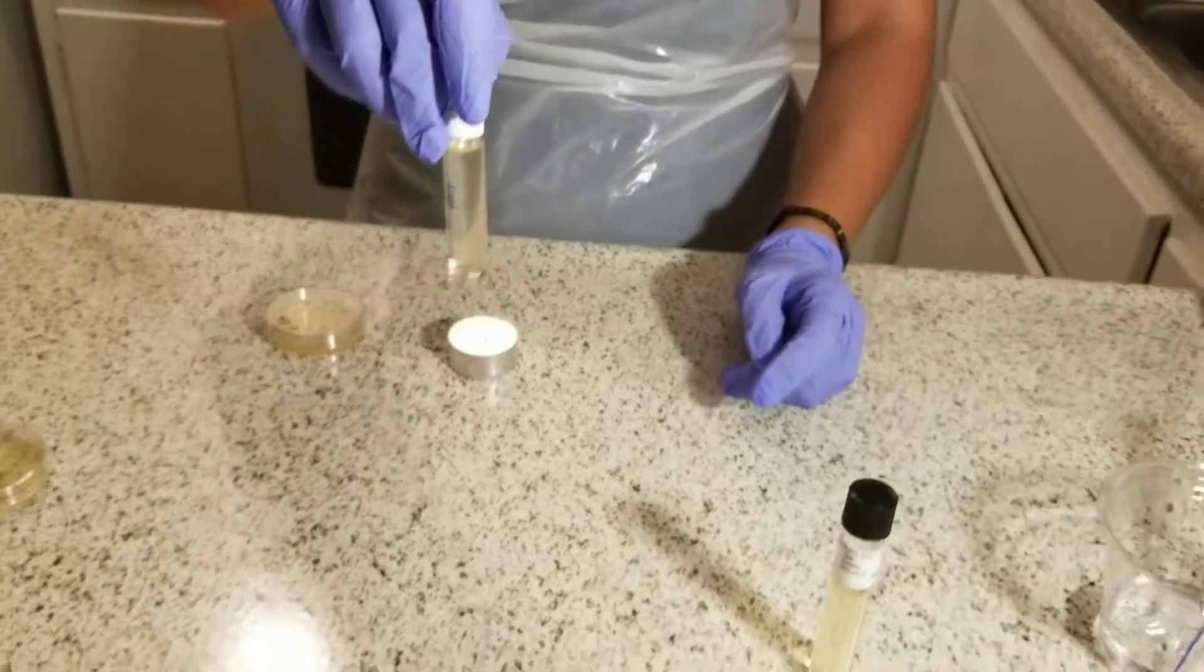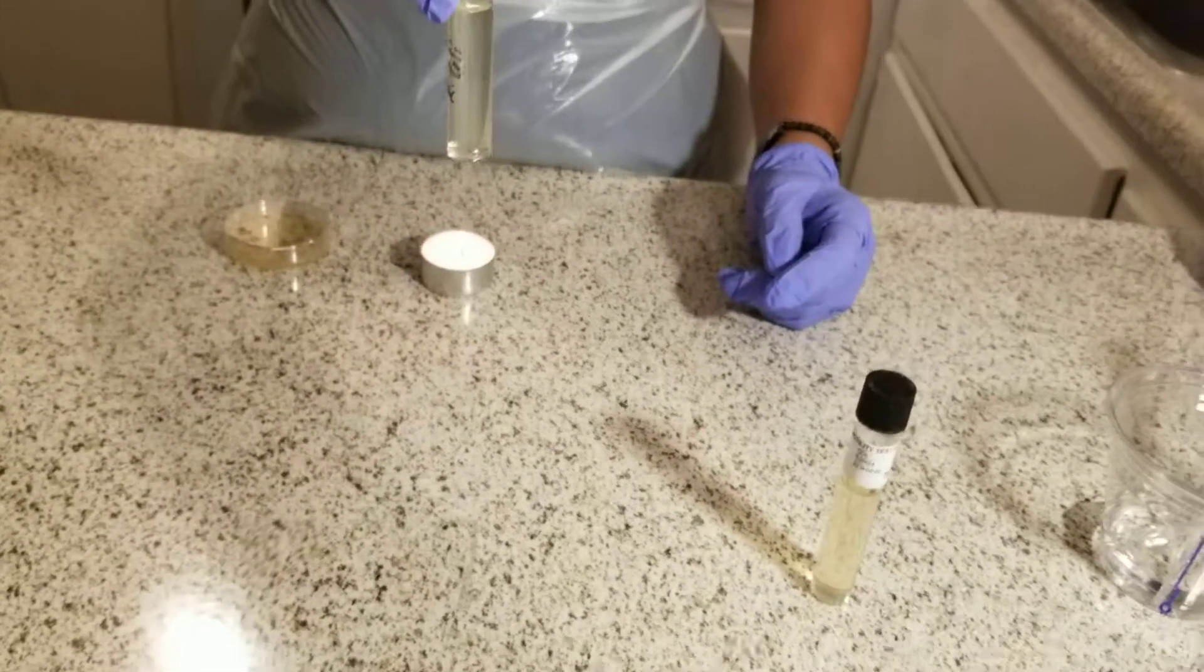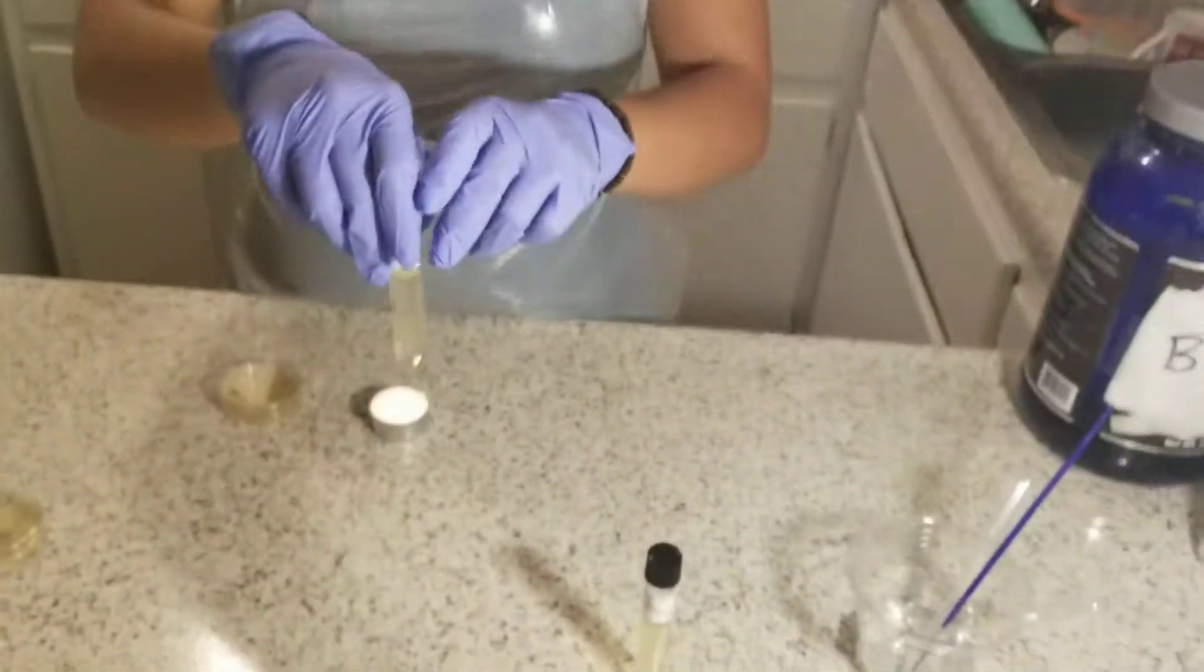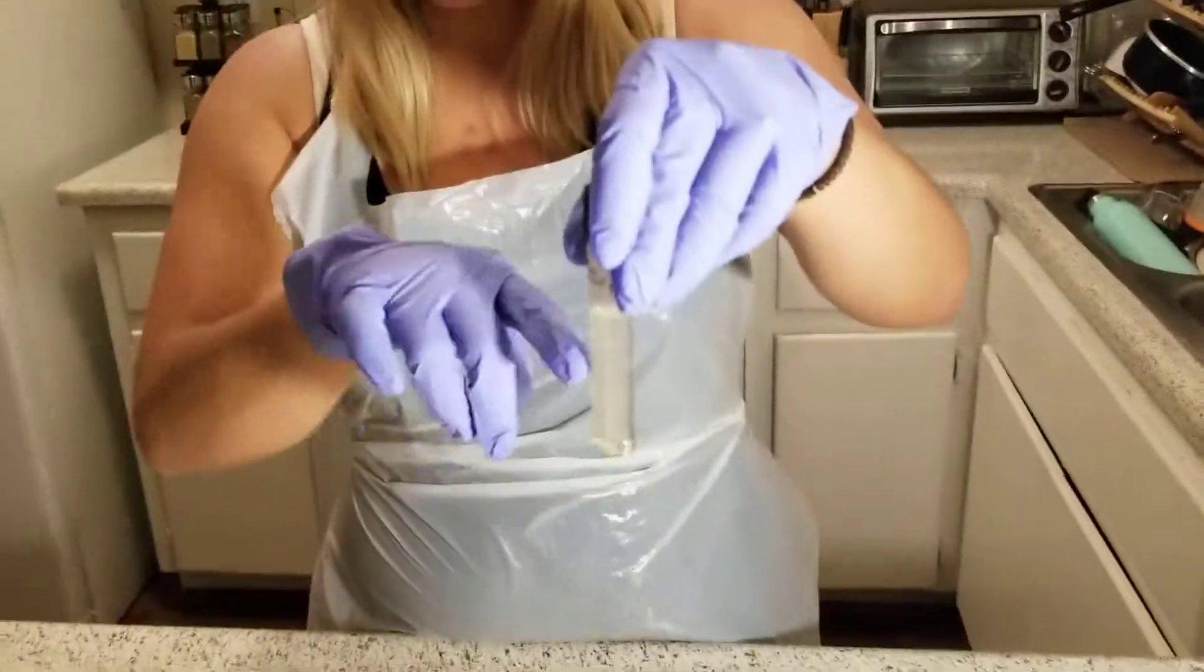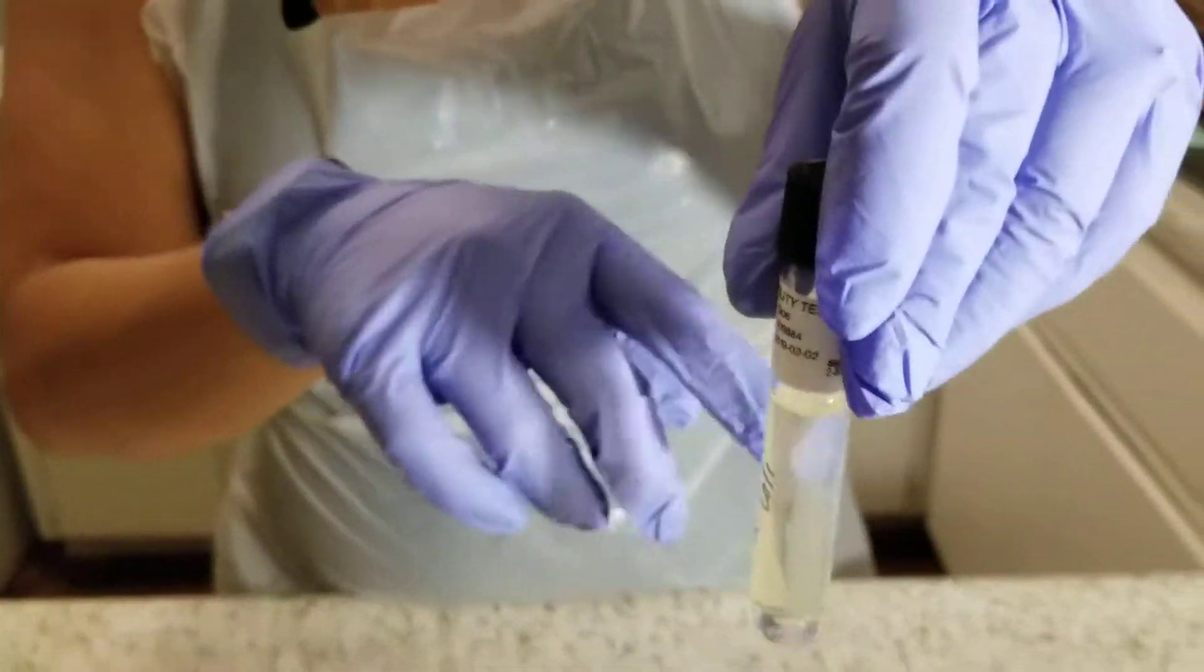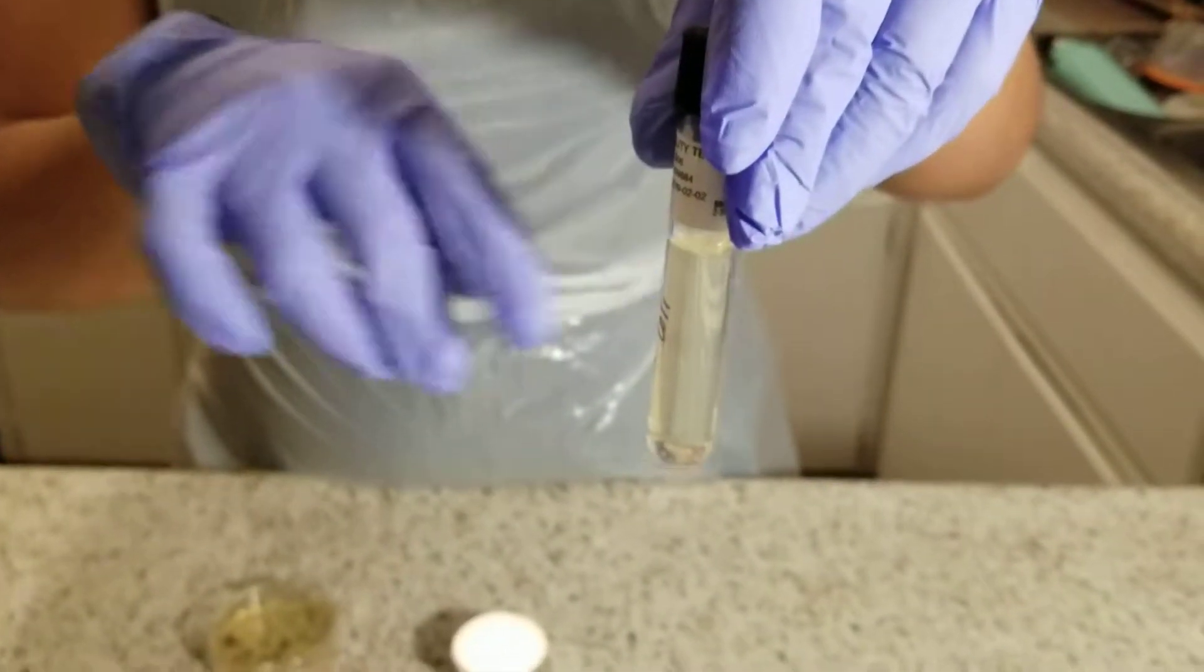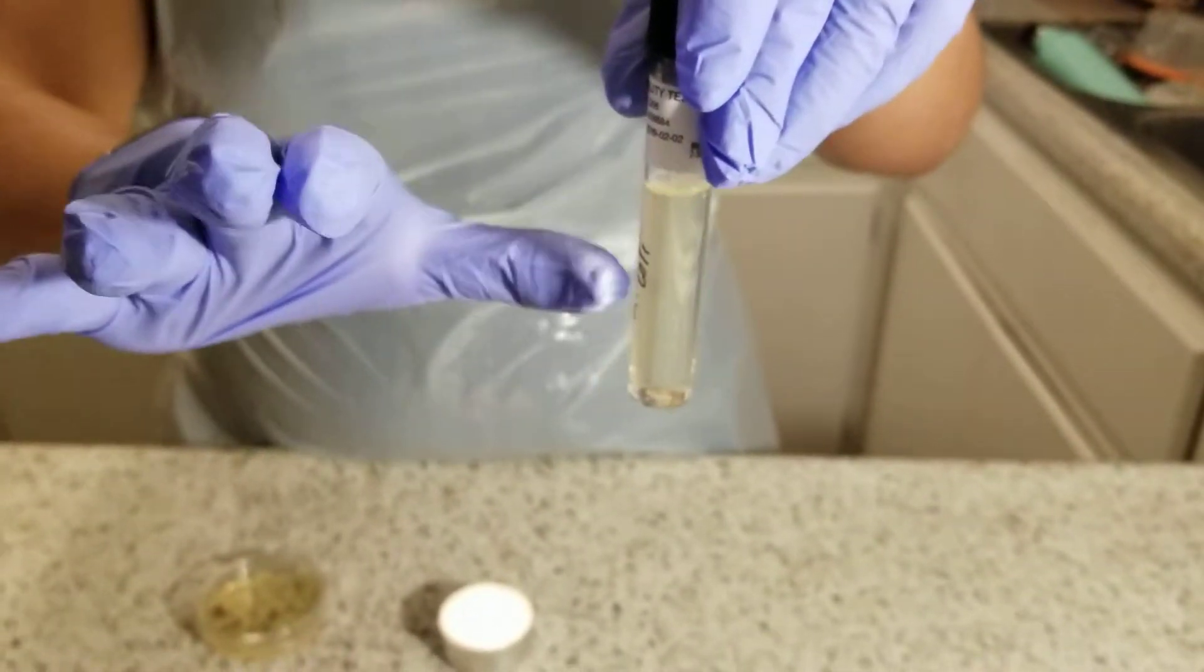After 48 hours, I'll observe the tube for motility. If there's positive motility for E. coli, I should see turbidity within the tube. If it's negative, there will be no turbidity and it will be clear.